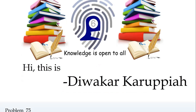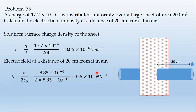Hi, this is Divaka Karupaiya. Problem no. 75: a charge of 17.7 × 10⁻⁴ coulomb is distributed uniformly over a large sheet of area 200 square meters. Calculate the electric field intensity at a distance of 20 centimeter from it in air.